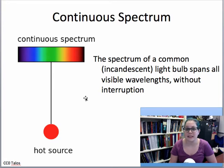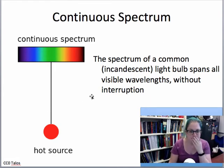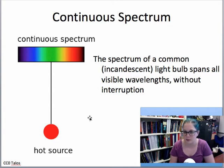For example, incandescent light bulb. Don't know how many of us still have incandescent light bulbs in our houses, but glass bulb, inside there's a little wire filament, gets really hot, and glows when it's hot. That will give off a continuous spectrum. Spans all wavelengths without interruption. Hot source, solid, dense gas, like the core of a star, but not all of a star.